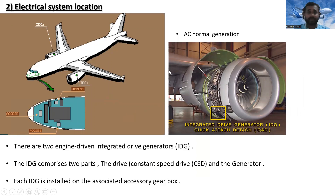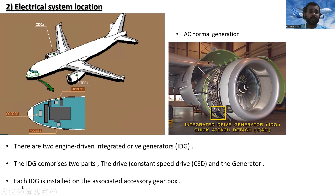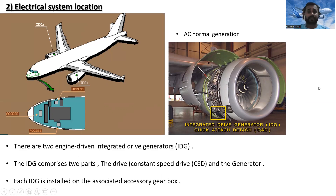Now let's look at the electrical system locations. For AC normal generation, there are two engine-driven Integrated Drive Generators — IDGs. Each IDG comprises two parts: the Constant Speed Drive and the generator. The IDG is installed on the associated accessory gearbox, and you can see it situated on the V2500 engine.